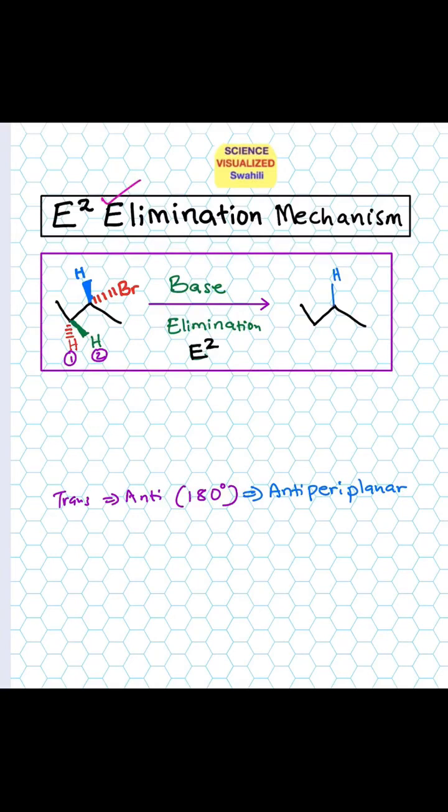This is a reaction mechanism presented to you by Science Visualized. In E2 elimination mechanism, we need a substrate, which in this case is an alkyl halide, and a base. The product will always be a double bond, so it gives an alkene product.